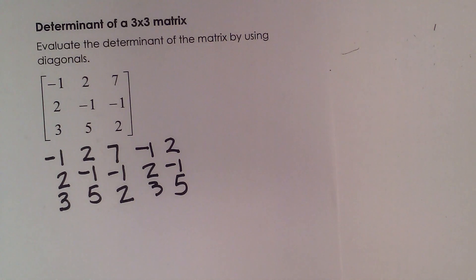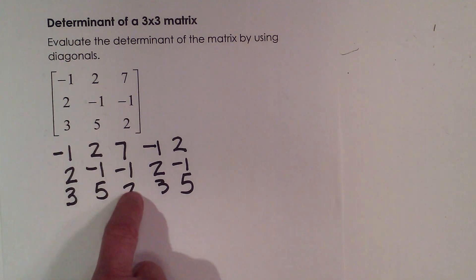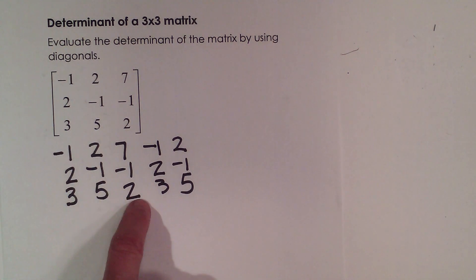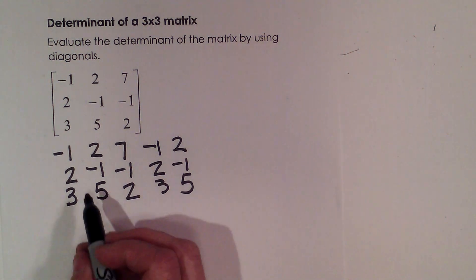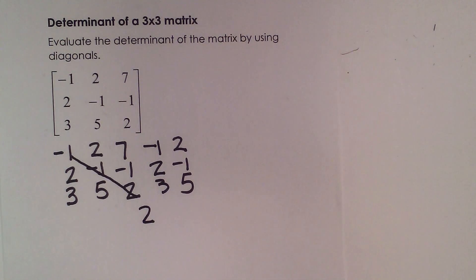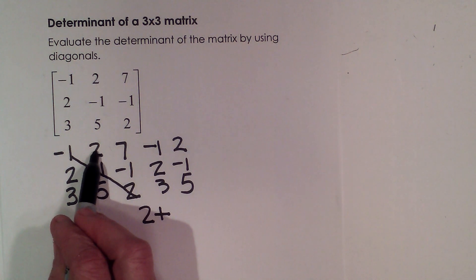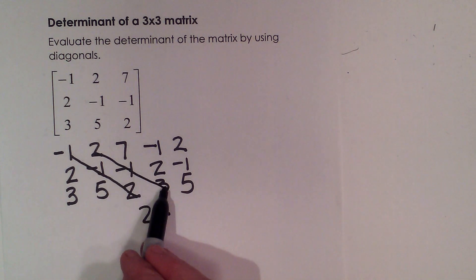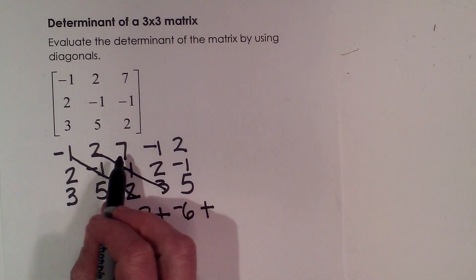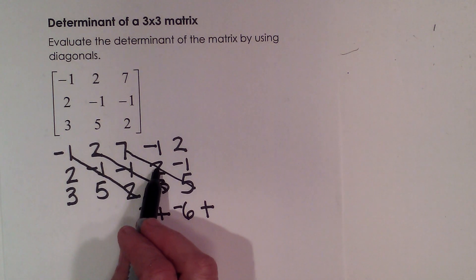Okay, now what I'm going to do is I'm going to take and multiply together and get the product of these diagonals. So I'm going to start at the top left corner and I'm going to go down a diagonal and multiply these together. So negative 1 times negative 1 times positive 2. That gives me positive 2. I'm going to add to that the next diagonal, 2 times negative 1 times 3, which is negative 6. Then I'm going to add to that the product of the third diagonal, which is 7 times 2 times 5.